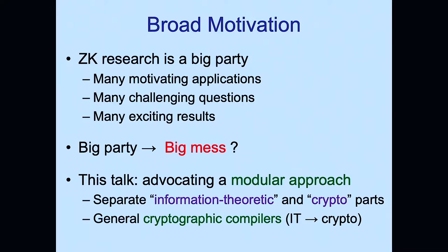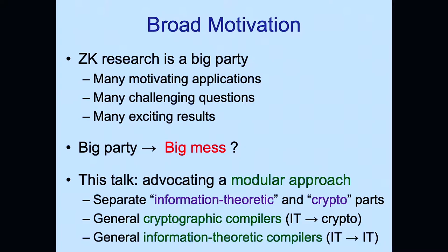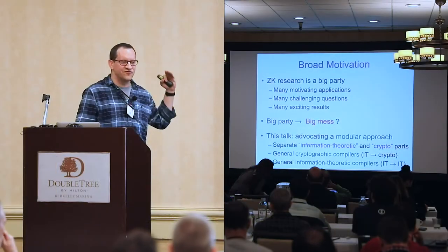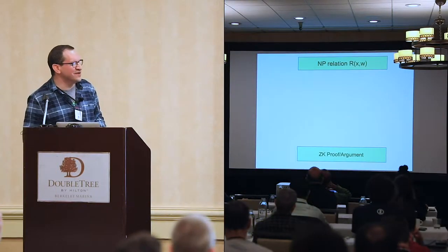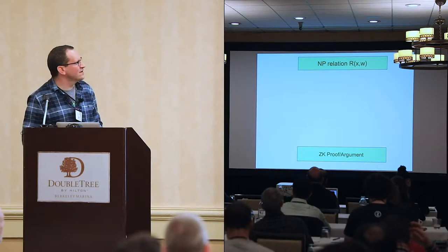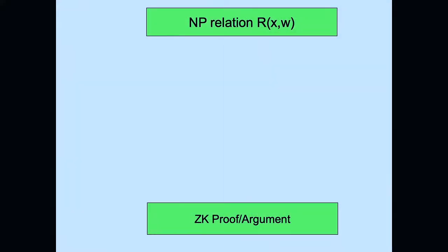We have cryptographic compilers to go from the information-theoretic part to the final cryptographic zero-knowledge proof, and information-theoretic compilers that allow us to move between different kinds of information-theoretic components.